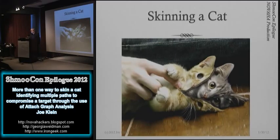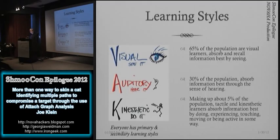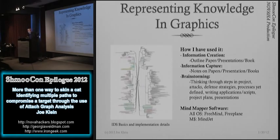One of the problems I noticed with a lot of the tools we have is the visualization is not appropriate. I am a visual learner, so I have to see something before I can take action on it. About 30% of the population are auditory learners, and there are also kinesthetic learners. For a long time I've been spending time doing these spider web graphs because this is how I learn.